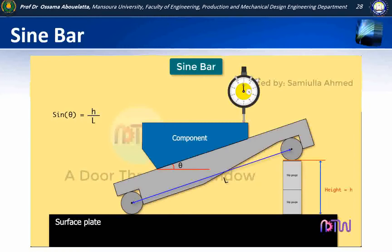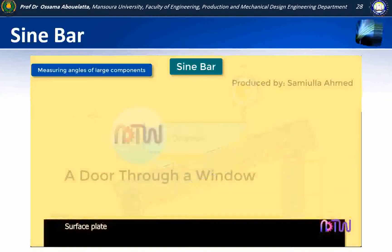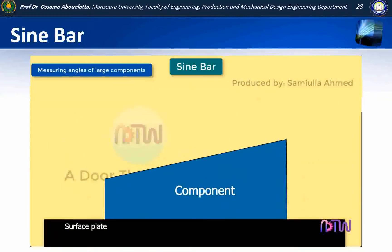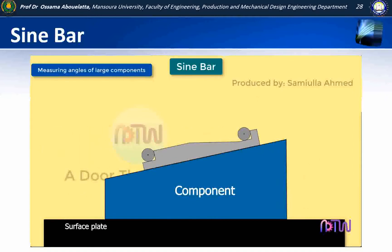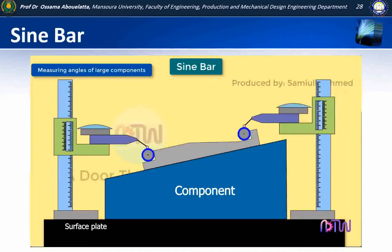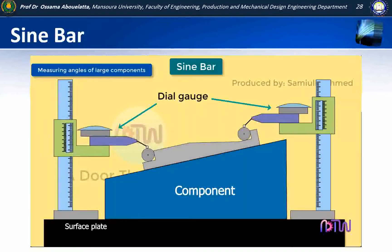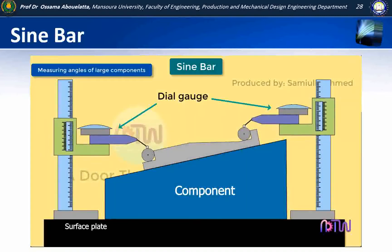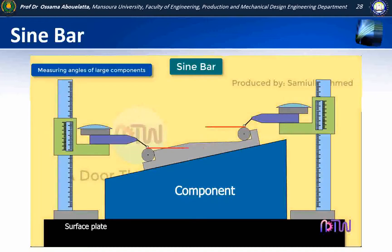Now let us see how sine bars are used to measure the angles of large components. When the component is too large to be mounted on the sine bar, the sine bar can be mounted on the component. The height over the rollers is measured by means of a vernier height gauge. A dial gauge is also used to check the measuring pressure. We adjust the height gauge until the dial gauge reads zero each time. The difference of the two height gauge readings is the height H, and we can use this relationship to find out angle theta.